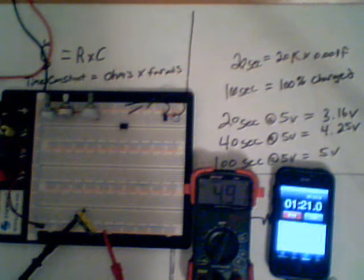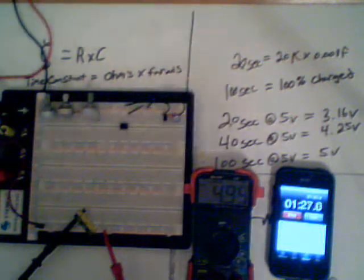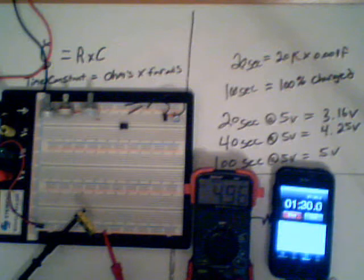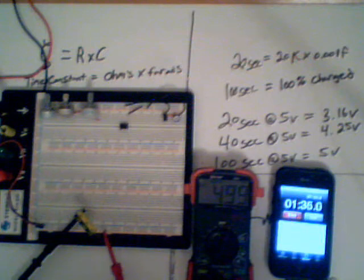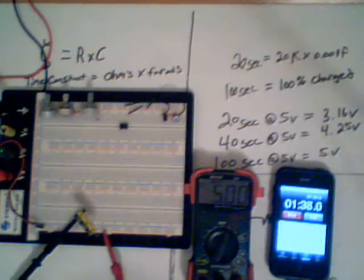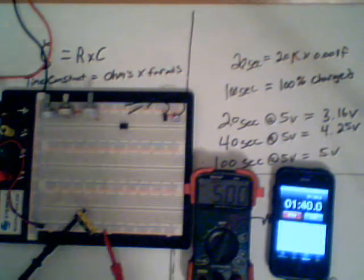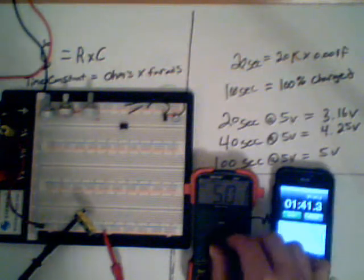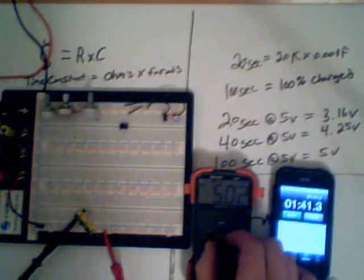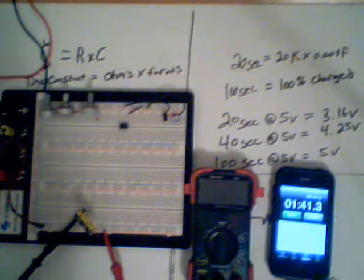so we're looking at a minute 40, it should be completely charged to 5 volts. And we are about 2 seconds off, but that was pretty close. And there you go. That is RC time constants. Thank you for watching the YouTube channel.